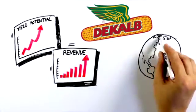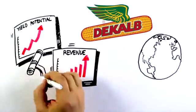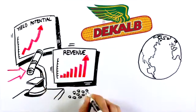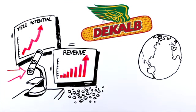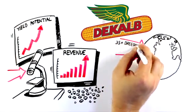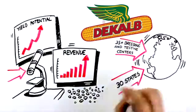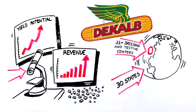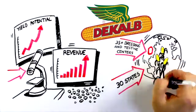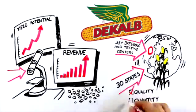Through Monsanto's global network, our breeding experts analyze millions of corn seeds annually from germplasm sources around the world. In the U.S., our robust pipeline is supported by a network of breeding and testing centers that span 30 states. In Ohio, local experts test for plants that deliver quality and quantity for Buckeye farmers on Buckeye soils.